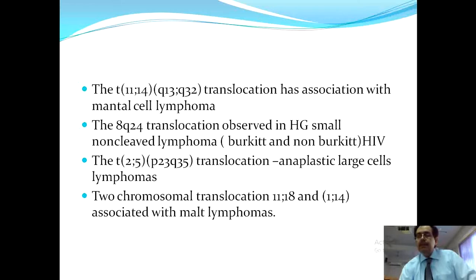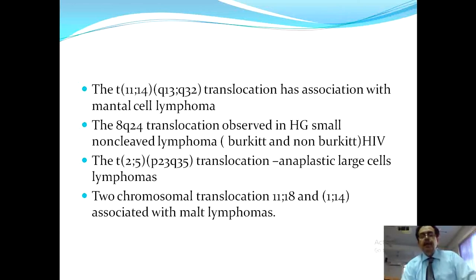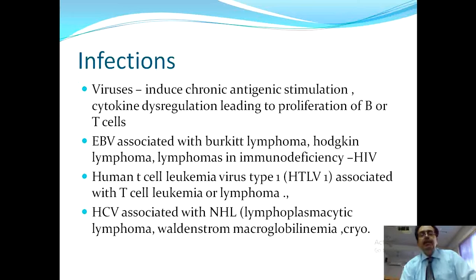Anaplastic large cell lymphomas are ALK-positive or ALK-negative. These patients present with lymphadenopathy, B symptoms, and sometimes masses related to breast implants. Translocations of 11 to 18 and 1 to 14 are also associated with MALT lymphomas — mucosa-associated lymphomas of the stomach — where the patient may present with epigastric fullness, hematemesis, or melena.